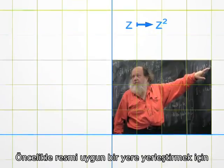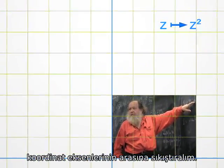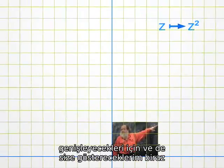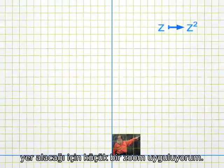Let's begin by placing the photo in a suitable place, flush against the coordinate axes. Then, I zoom a little bit, since the squaring process will change the size of things. And I need space to show you this.